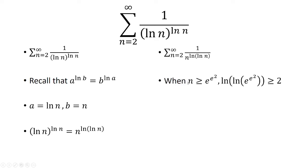And recall that when n is greater than or equal to e raised to the e squared power, ln of ln of e to the e squared power is greater than or equal to 2. To convince you, we can rewrite this as ln of e squared times ln of e. ln of e is 1, so this is just ln of e squared, which is 2.